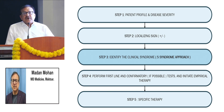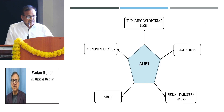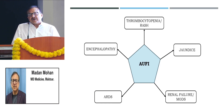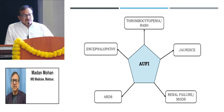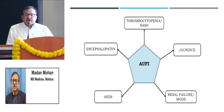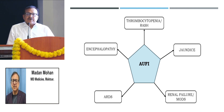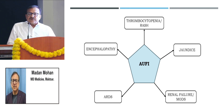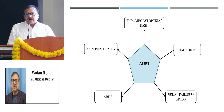Then I go on to the syndromic approach which has been advocated in undifferentiated fever. They have divided undifferentiated fever into five categories — five syndromes. These include acute undifferentiated febrile illness with thrombocytopenia with or without rash, along with jaundice, with renal failure and evidence of multiple organ dysfunction, patients presenting with ARDS, or patients presenting with encephalopathy. Most of the conditions sometimes overlap, so these things have to be taken in mind.